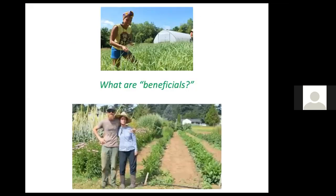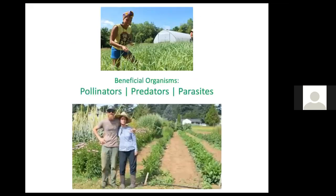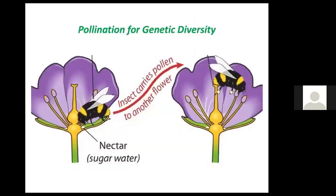What are the beneficials referred to in this topic? They are beneficial organisms that help farmers and gardeners grow the food and other crops that we need. They come in three categories — the three Ps: pollinators, predators, and parasites. Pollinators are important because without them, every generation of plants would be identical to their parents. There would be no diversity, no resilience in response to changes, and no ways for plants to improve in vigor.